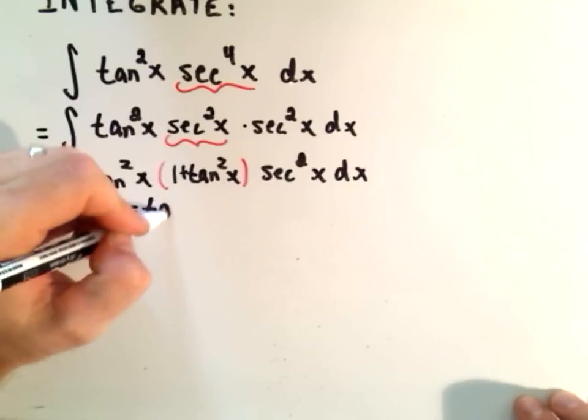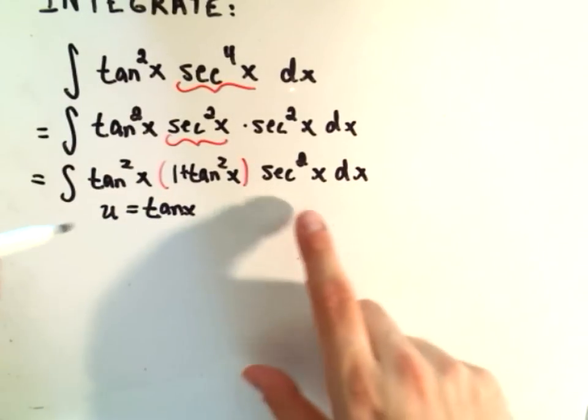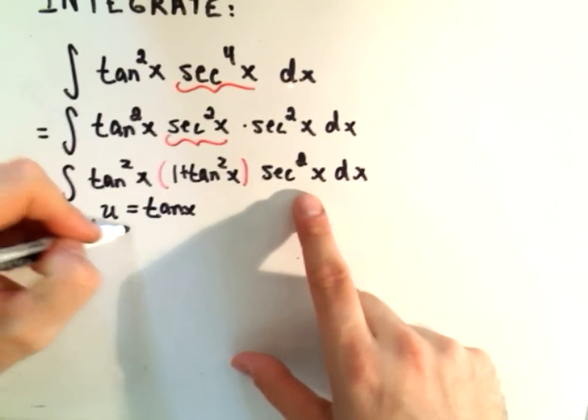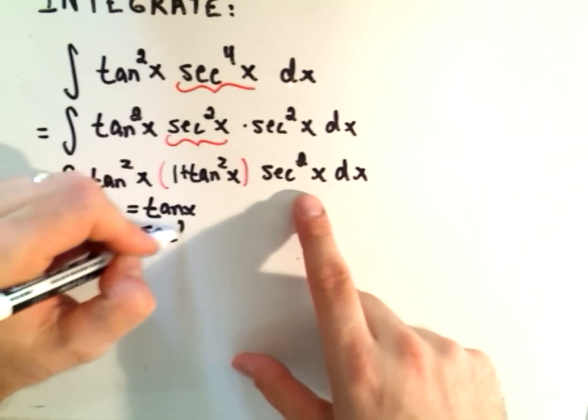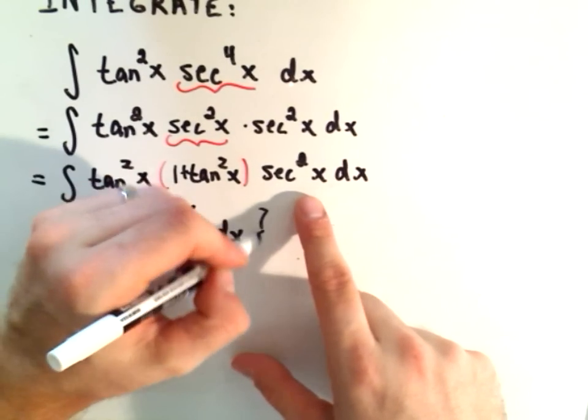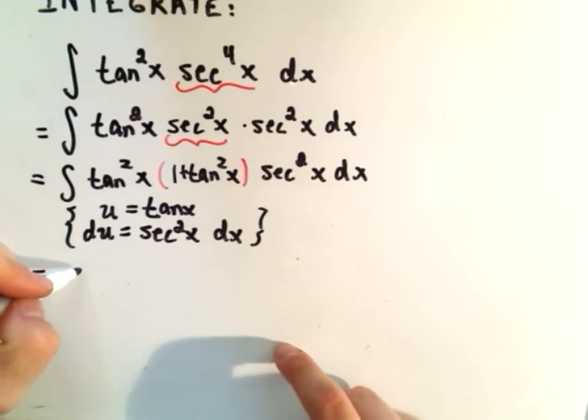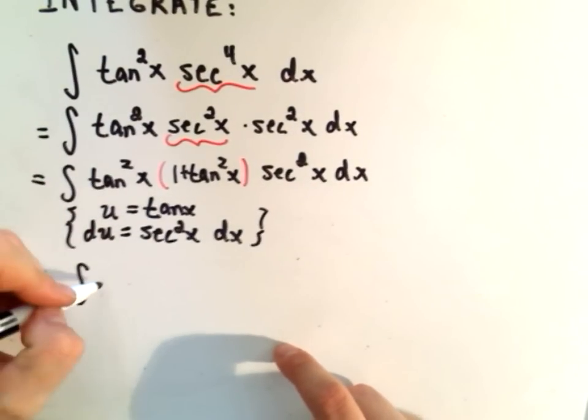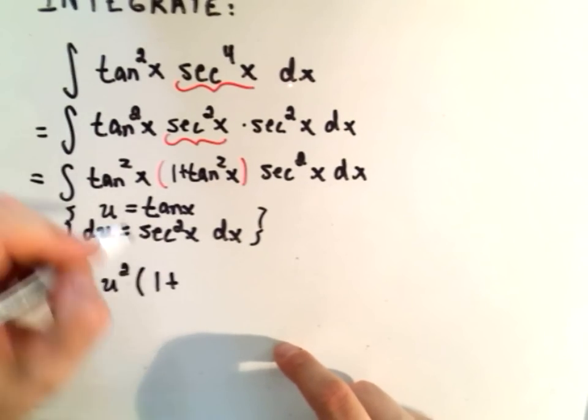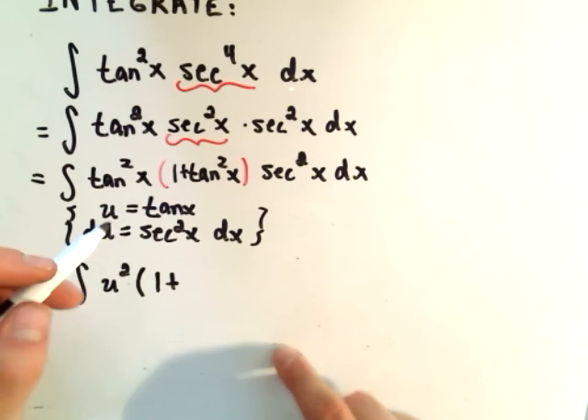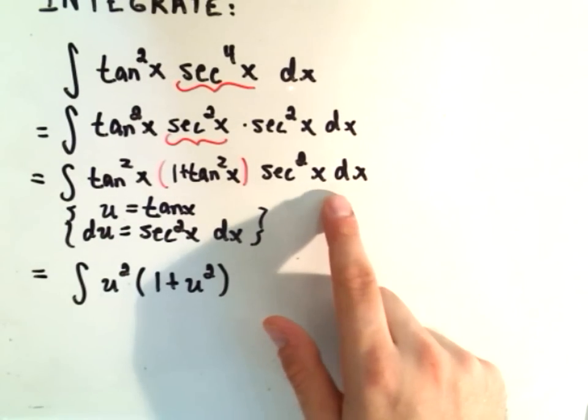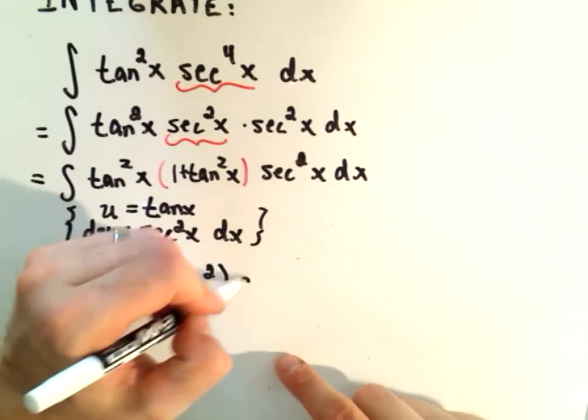We let u equal tangent of x. That's the whole point of keeping the secant squared, because now the derivative will simply be secant squared of x dx. And our substitution will work out kind of nice and cleanly. So tangent squared, that's u, so we'll get u squared. 1 plus if we replace tangent of x with u, we'll get again a u squared.